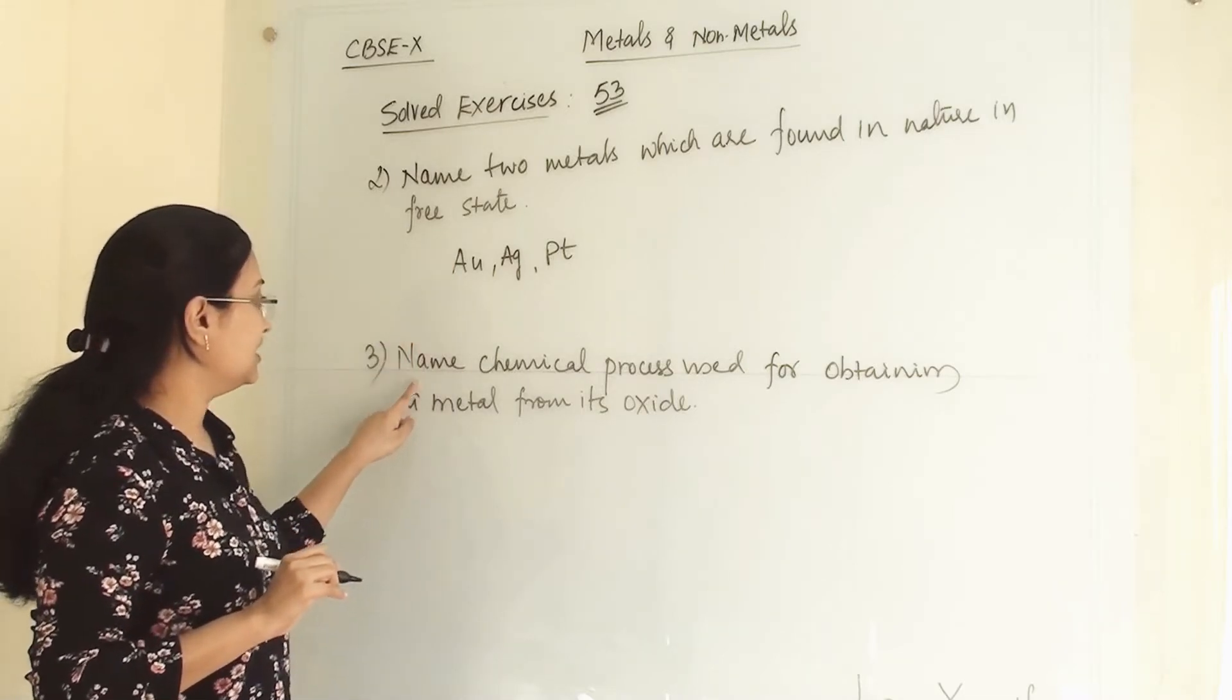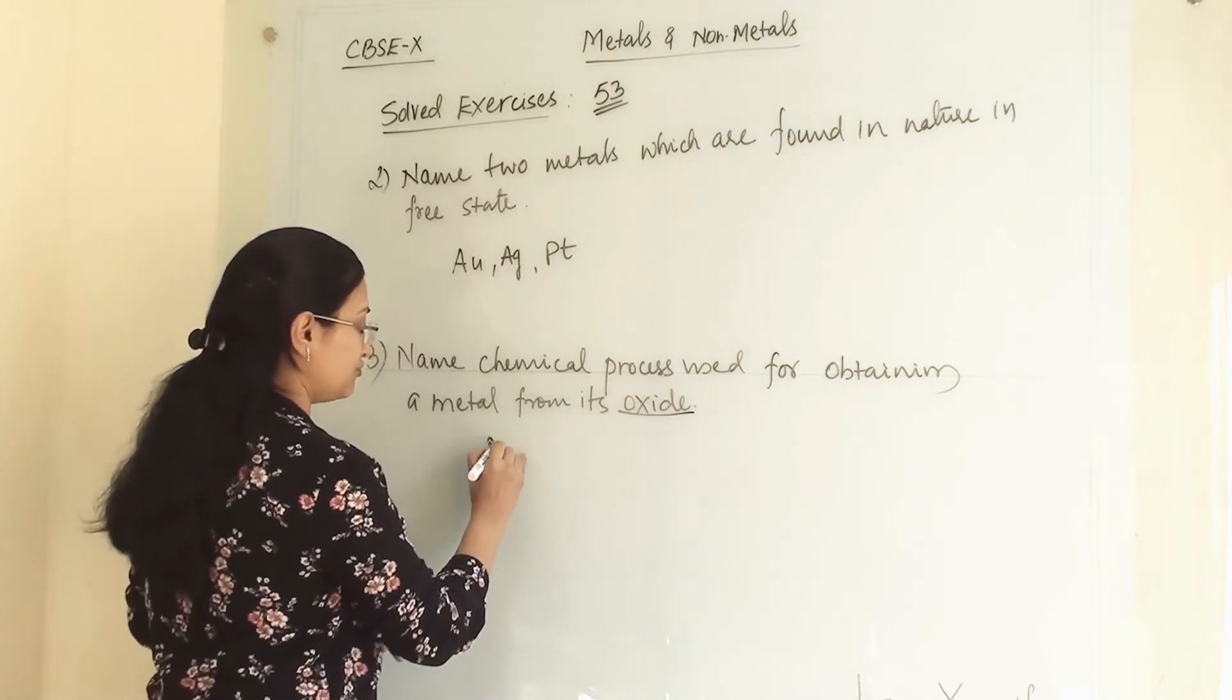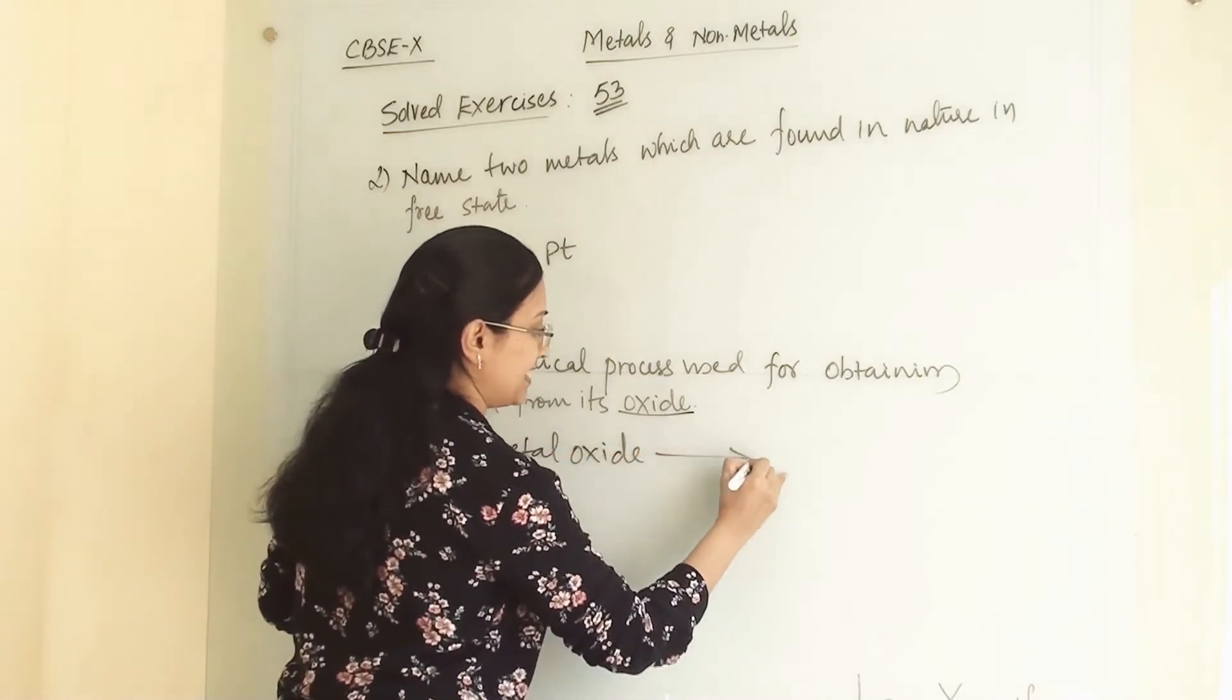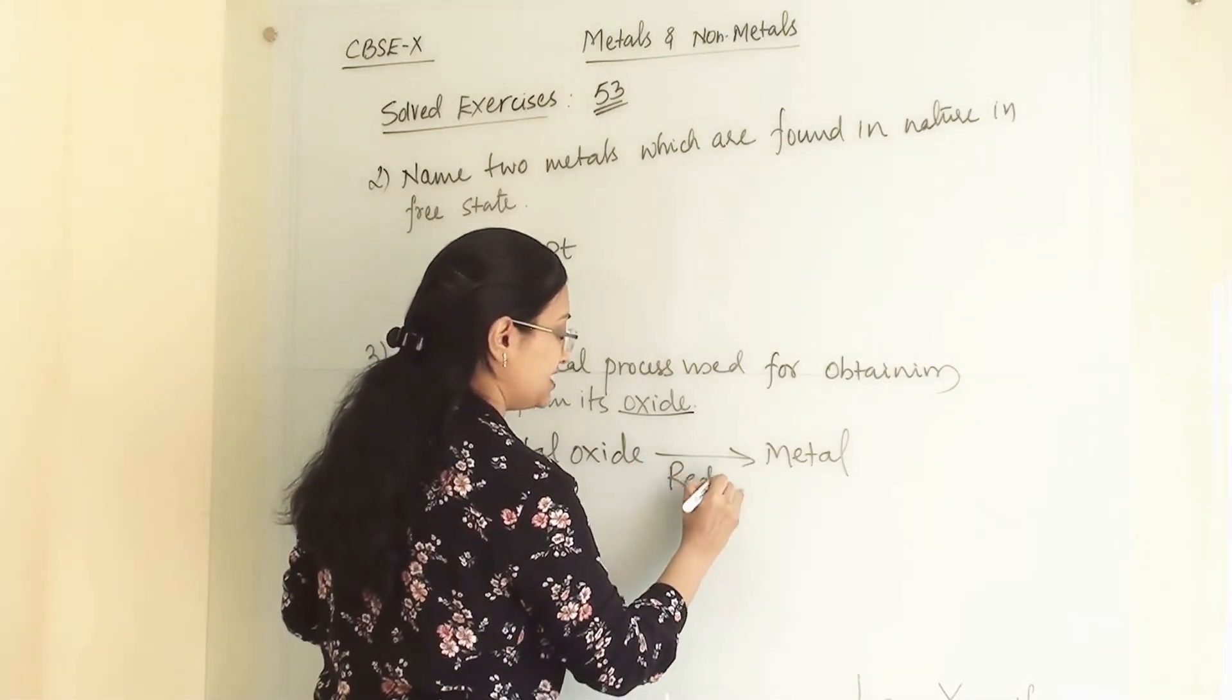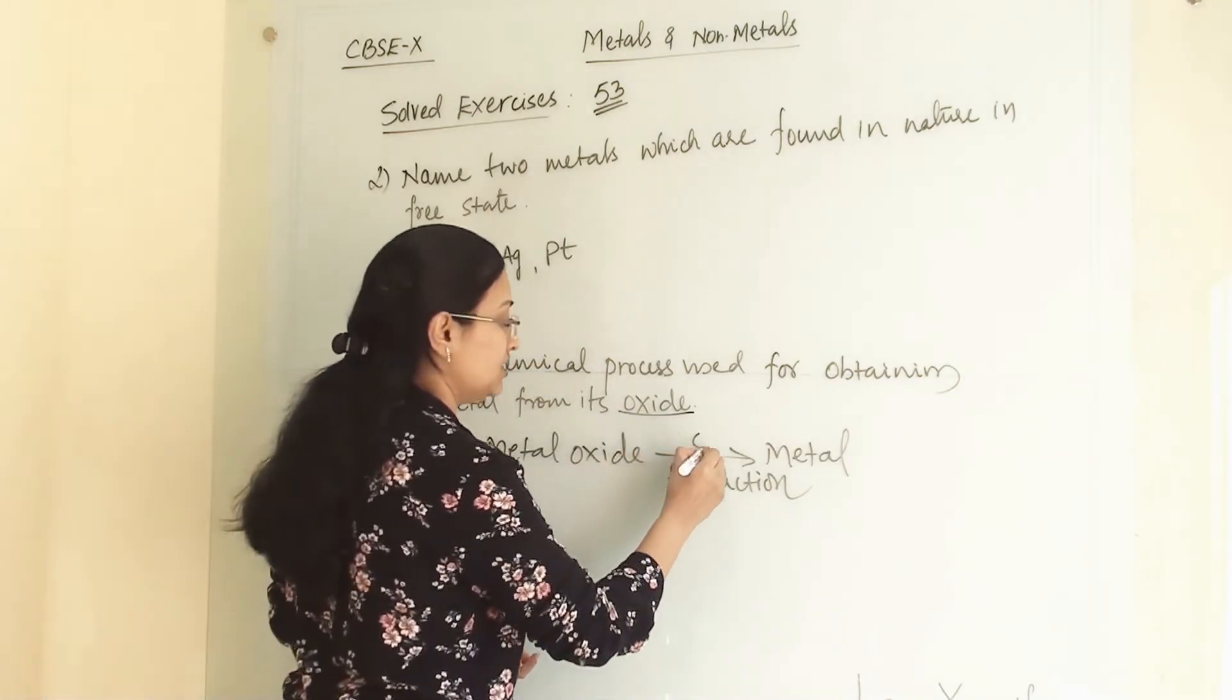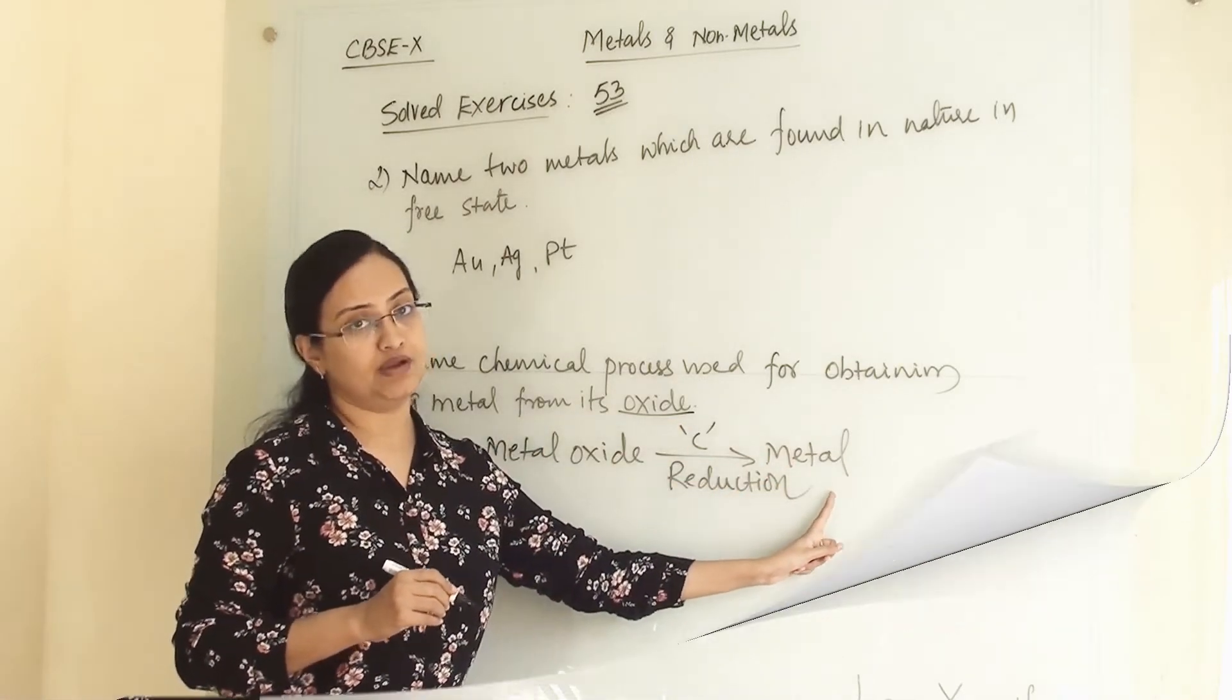Third question: Name the chemical process used for obtaining a metal from its oxide. From metal oxide we want metal, and for this which step we are performing? We are performing reduction step, and this process is known as reduction. With carbon we are reducing metal oxide and we will get metal.